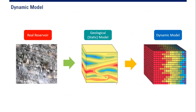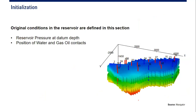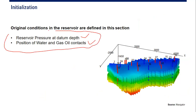Once we have the dynamic model, before running the simulation we need to perform initialization to get the initial original condition of the reservoir. The original conditions are defined by reservoir pressure at datum depth and the position of water-oil contact and gas-oil contact. These two — datum pressure and fluid contacts — are the most important inputs for initialization.